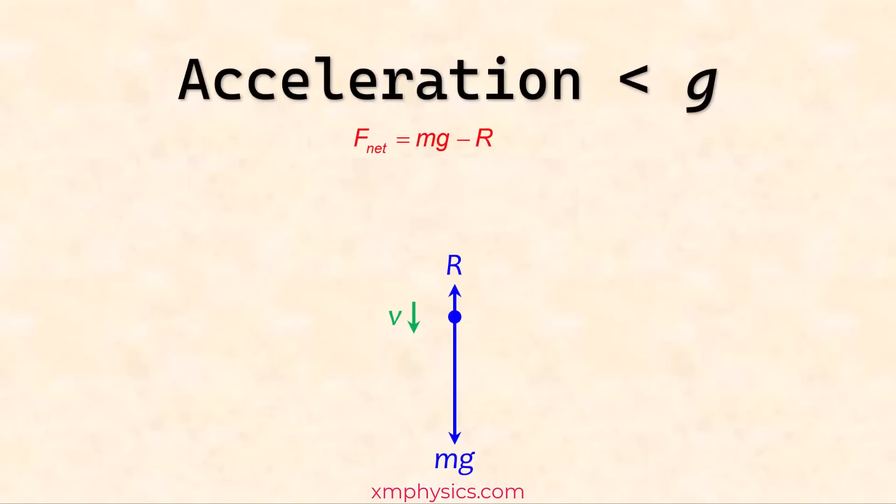So the net force is going to be smaller than mg. And because of that, the acceleration is going to be smaller than g. In fact, if the basketball is moving fast enough that the air resistance actually matches the weight, then the net force is going to be zero. That means acceleration is zero. What does zero acceleration mean? It means that the speed doesn't increase anymore. So that is the terminal velocity.